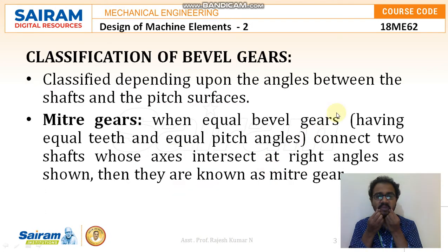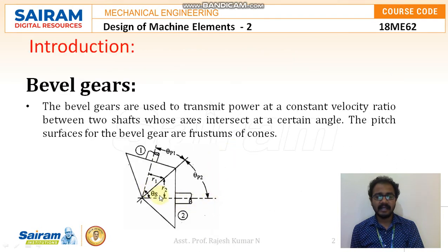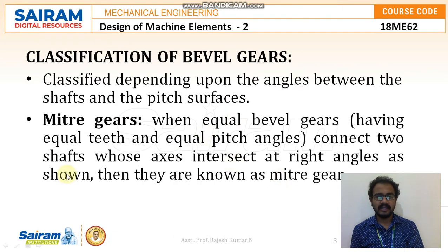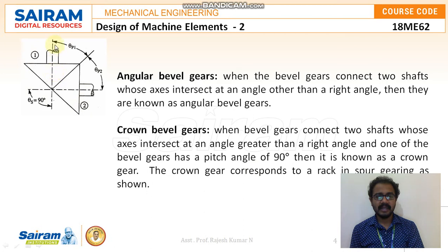Bevel gears can be classified depending upon the angles between the shafts and the pitch surfaces. Based on the angle theta_s, we can classify bevel gears. The first type is miter gears — when two equal bevel gears having equal teeth and equal pitch angle are connected with two shafts whose axes intersect at right angles, as shown in this example where shaft 1 and shaft 2 meet at 90 degrees.